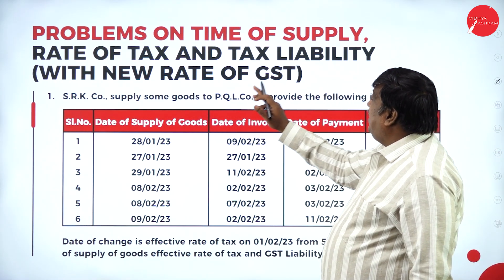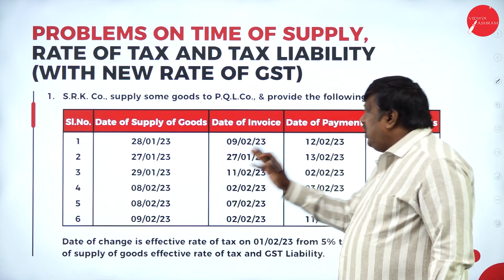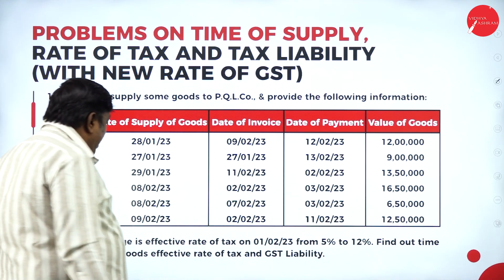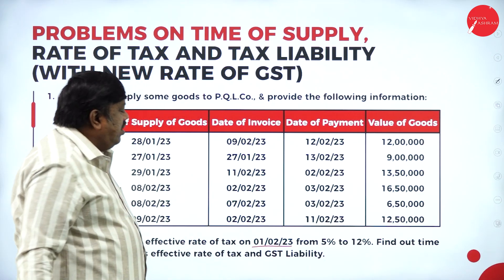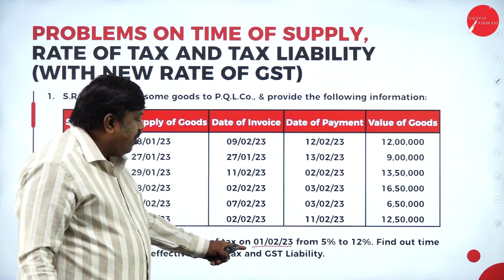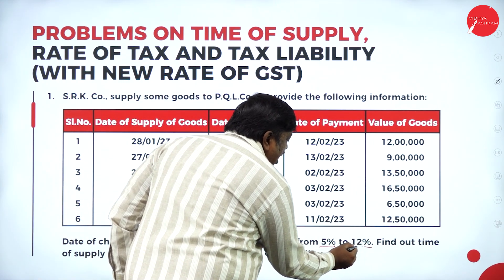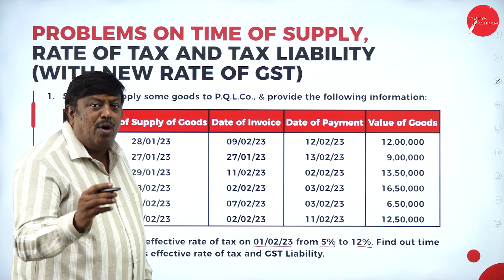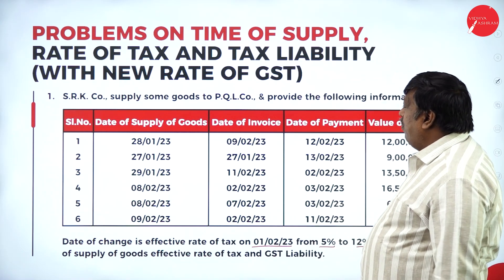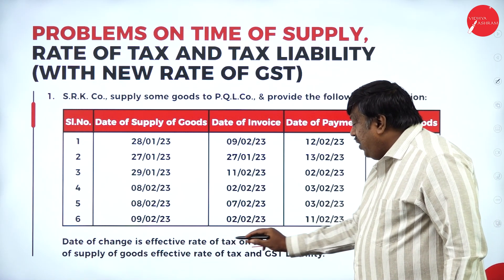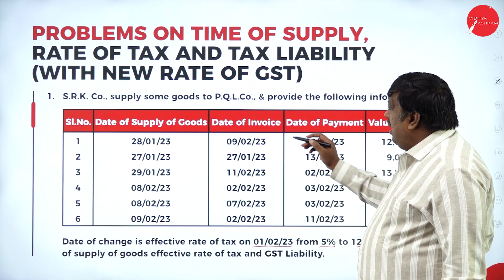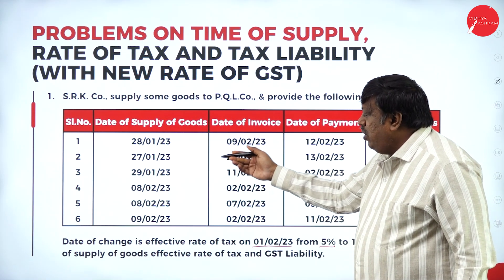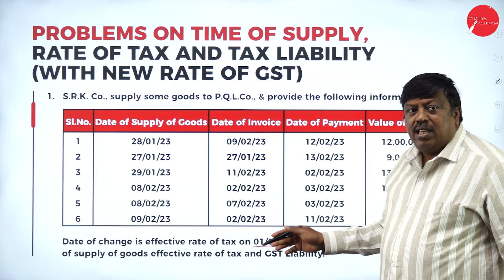Problem on time of supply, rate of tax, and tax liability with new rate of GST. Date of supply of goods, invoice, payment, and value of goods are given. Date of change of effective rate of tax is 1st February — earlier it was 5%, now it is 12%. Find the time of supply of goods with effective rate of tax and GST liability. For time of supply, consider date of invoice and date of payment — whichever is earlier. Then decide whether the new rate or old rate applies.